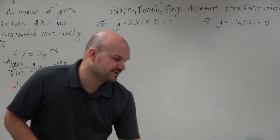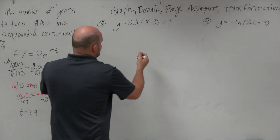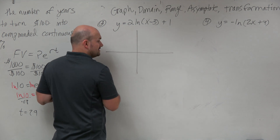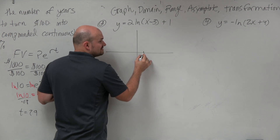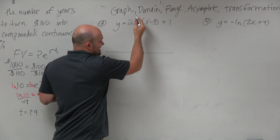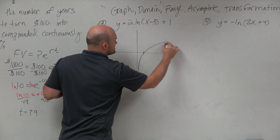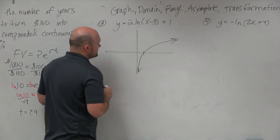When graphing logarithmic functions, the main important thing is to at least know what the parent graph looks like. The parent graph has an x-intercept at 1, has a vertical asymptote at 0, and looks something like this.